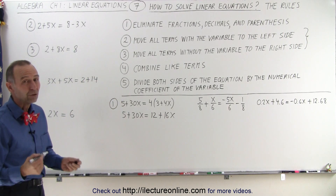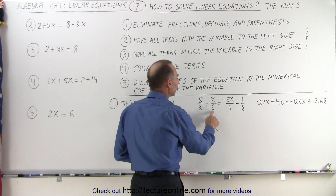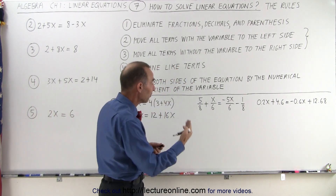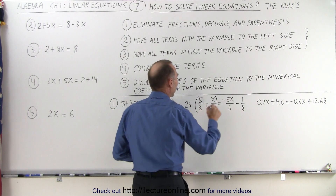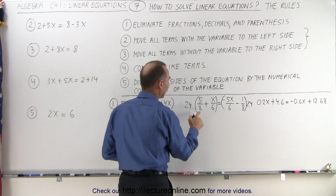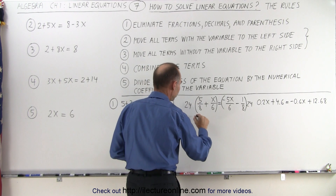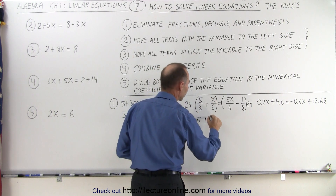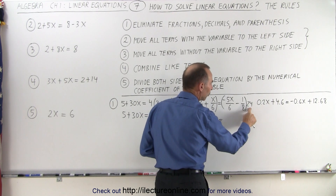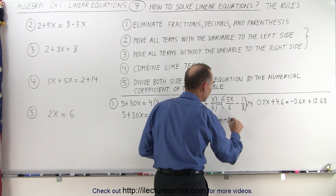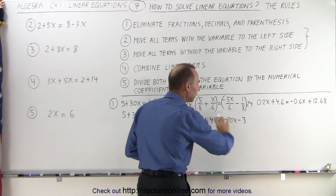For the fraction example, we multiply both sides of the equation by the lowest common denominator. The lowest common denominator for 8 and 6 is 24. So we multiply both sides by 24. Eight goes into 24 three times, so 3 times 5 is 15; 6 goes into 24 four times, so 4 times x is 4x. On the right side, 6 goes into 24 four times, so 4 times minus 5x is minus 20x; and 8 goes into 24 three times, so 3 times minus 1 is minus 3. This is how we eliminate fractions.